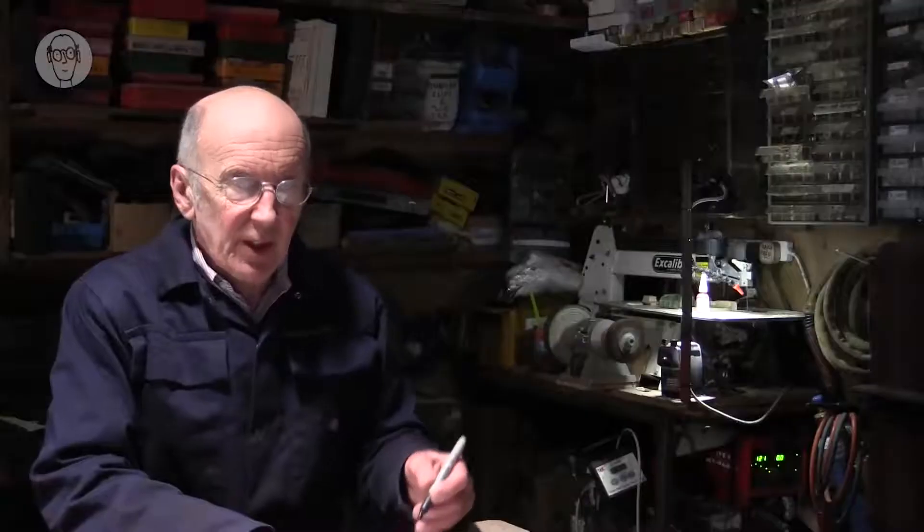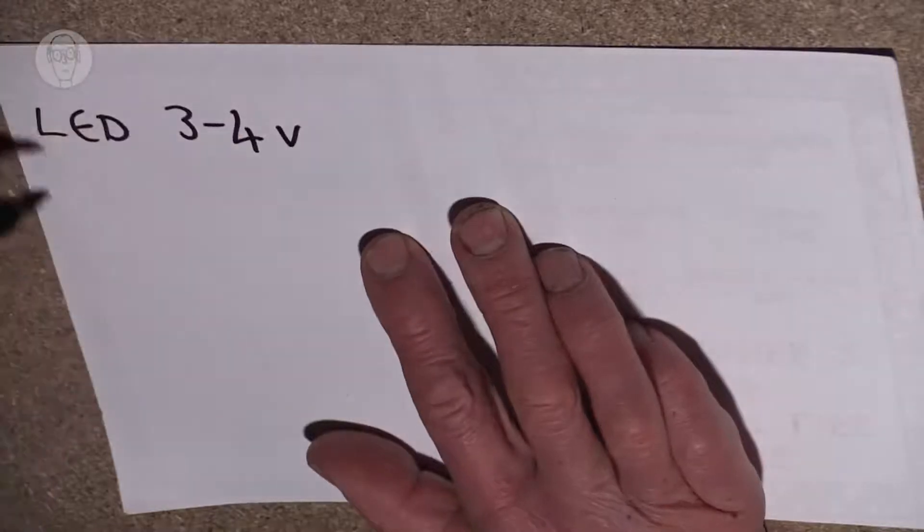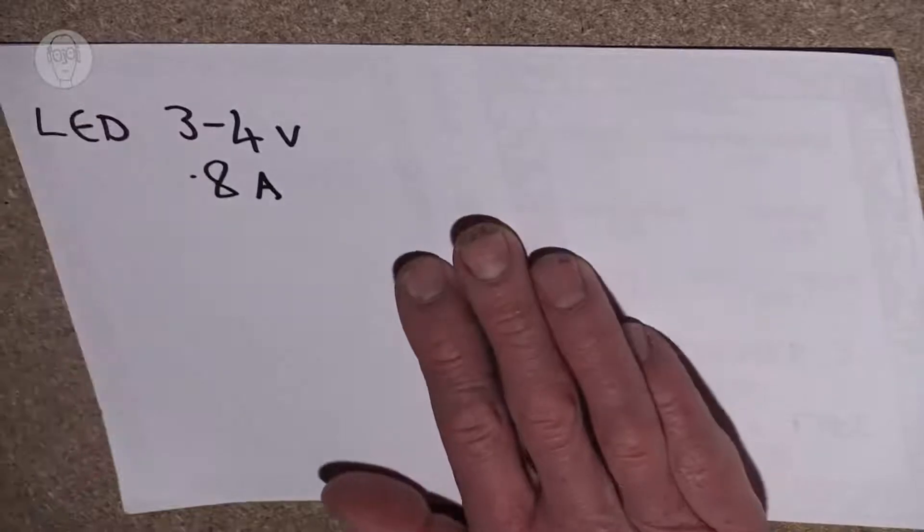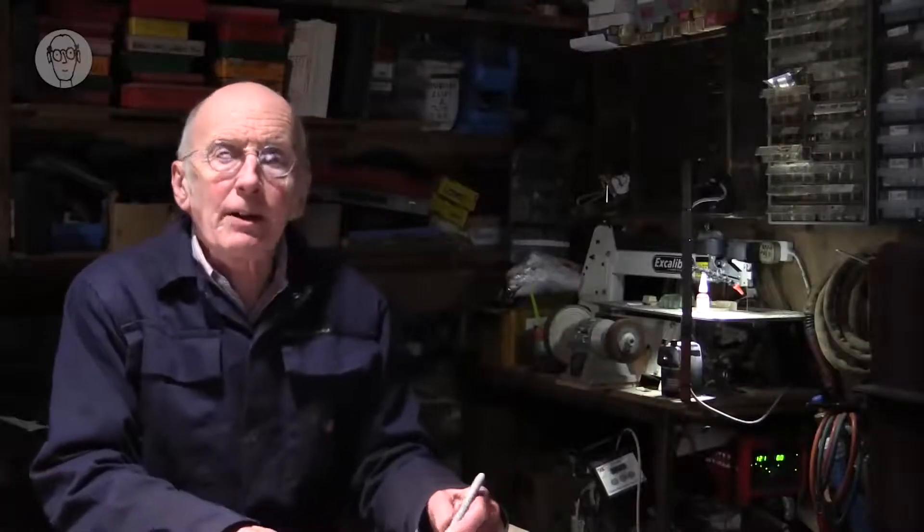I'll now show you how I go about it. For an LED that's rated at 3 to 4 volts and 0.8 of an amp, and you want to run it off a power supply that's 12 volts.